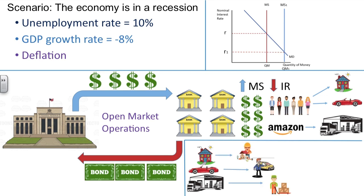Ultimately, whether it is consumers buying big ticket items like cars and houses or businesses expanding, the C component and the I component of GDP are causing economic activity to occur. The construction of a house is going to require builders. The sale of cars is going to require salespersons and other individuals involved in the process. Amazon expanding and building a warehouse will need workers to stock the shelves and prepare items for shipping. Open market operations increasing the money supply drives down interest rates in the hope that consumers and businesses will borrow, thus creating economic activity.